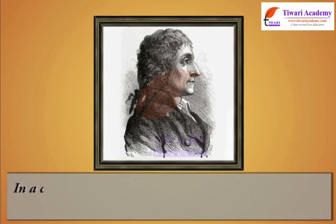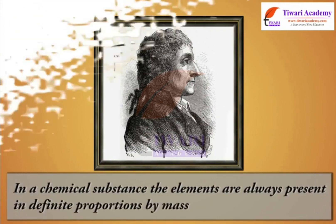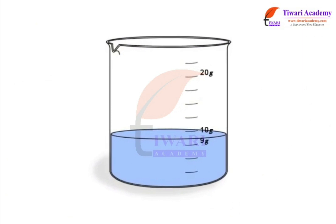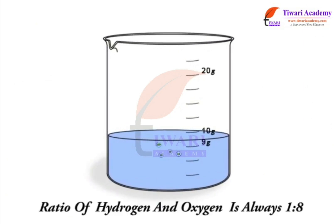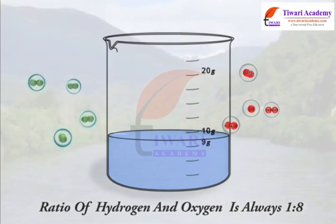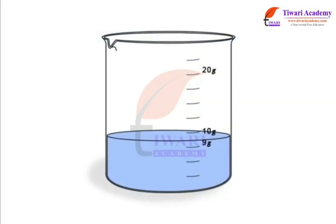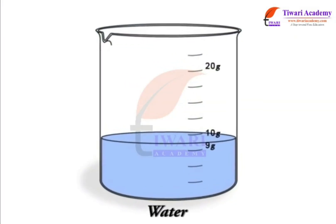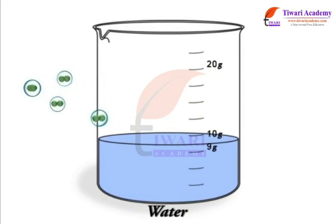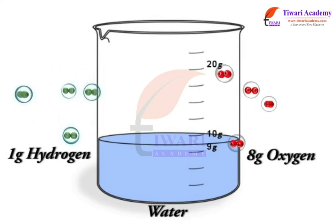In a chemical substance, the elements are always present in definite proportions by mass. In the formation of water, the ratio of the mass of hydrogen to the mass of oxygen is always 1:8, whatever the source of water. Thus, if 9 grams of water is decomposed, 1 gram of hydrogen and 8 grams of oxygen are always obtained.